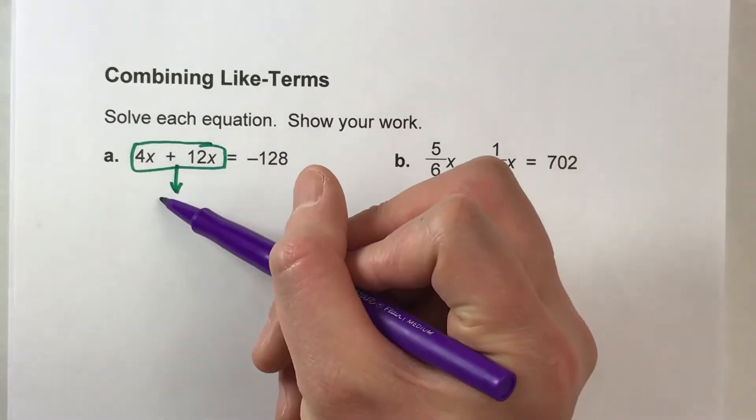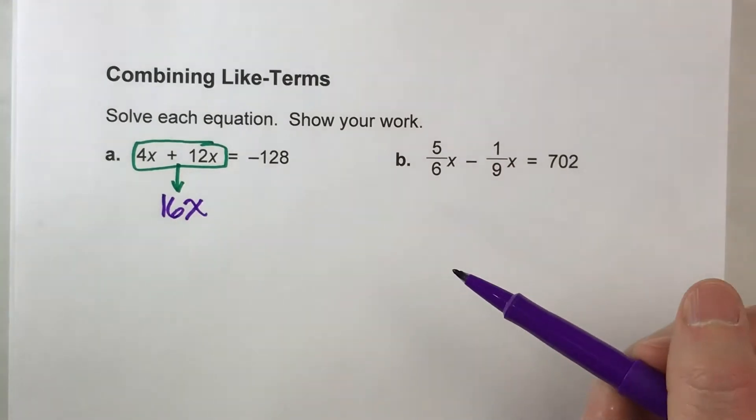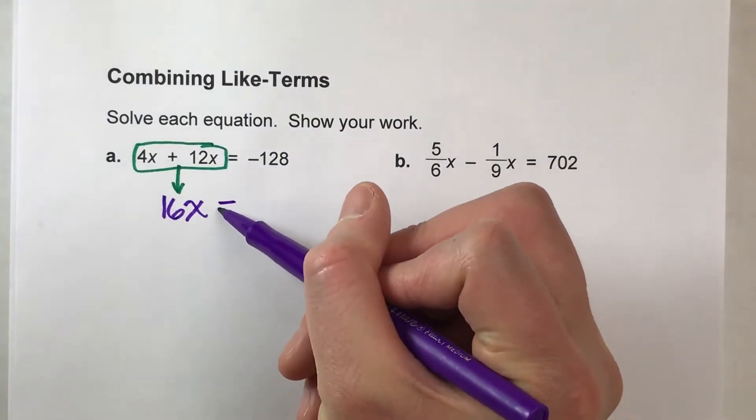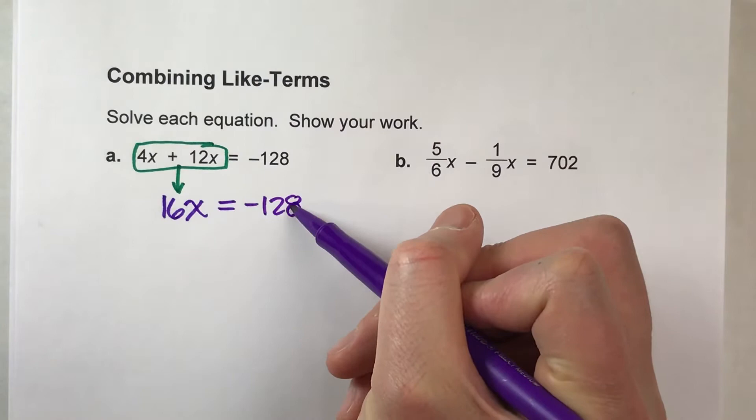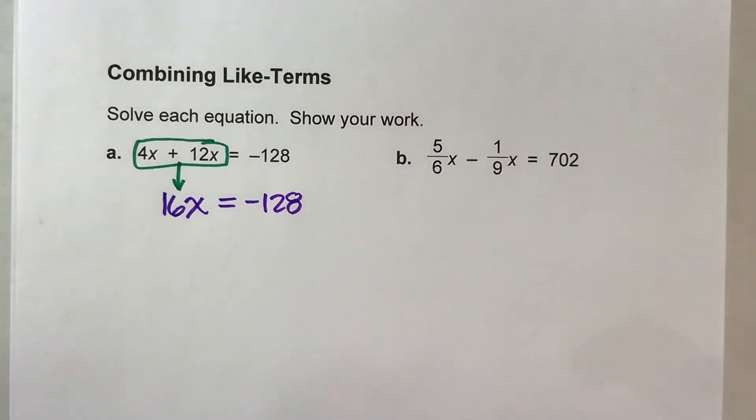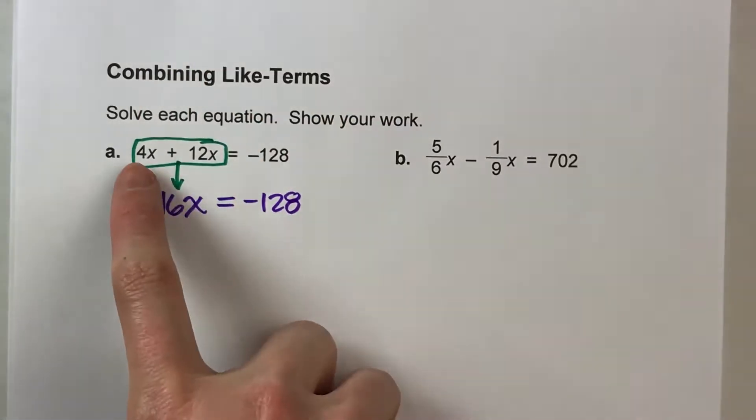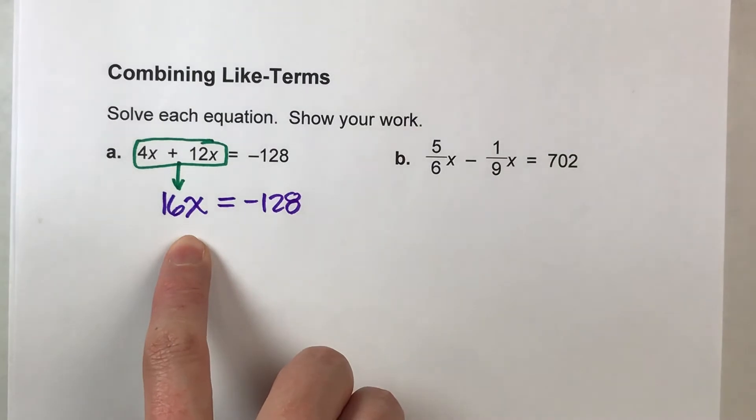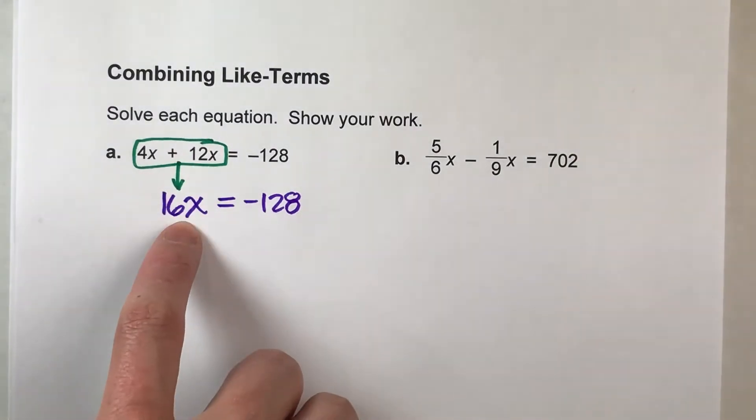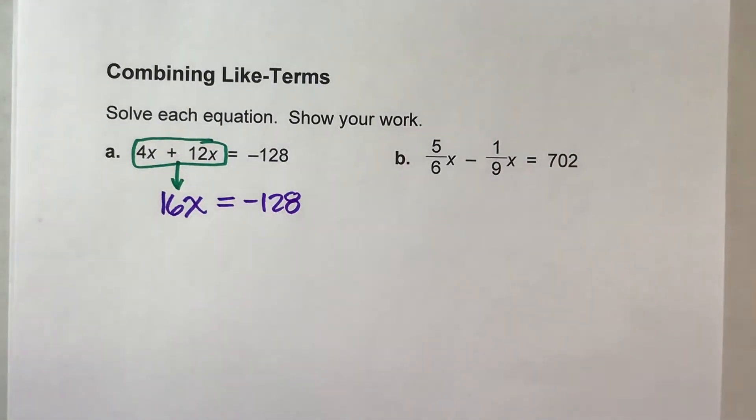4x's plus 12x's gives us 16x's. And then I can drop everything else down. Alright, so all we did was took our two different groups of x's and made it one big group because they are on the same side of the equal sign.